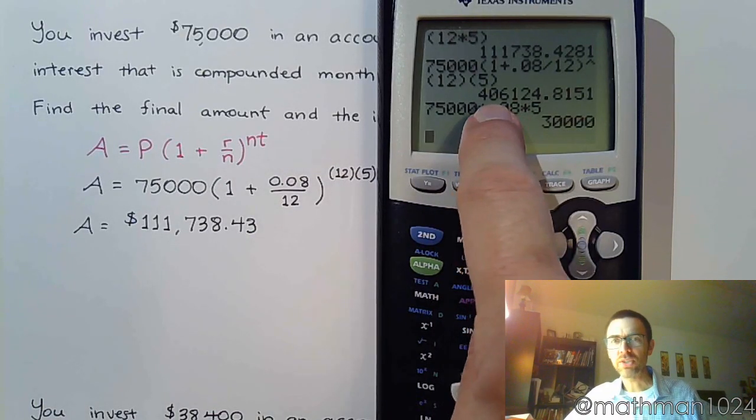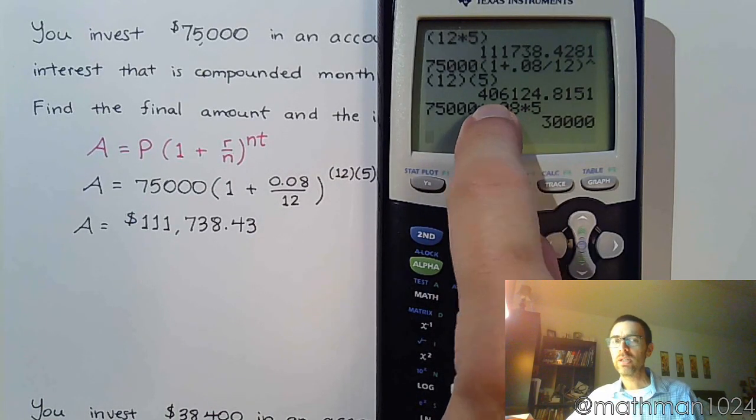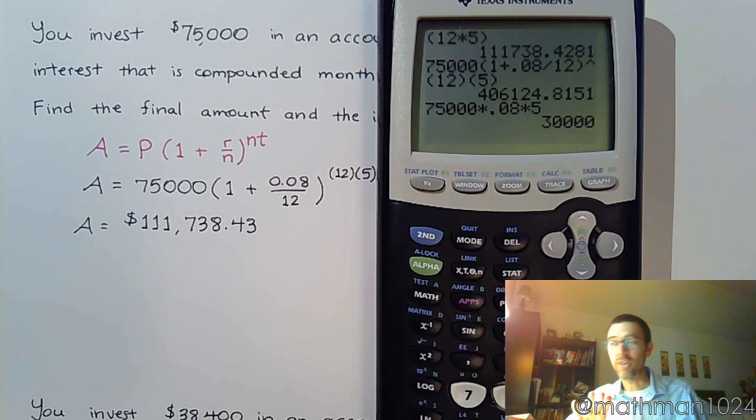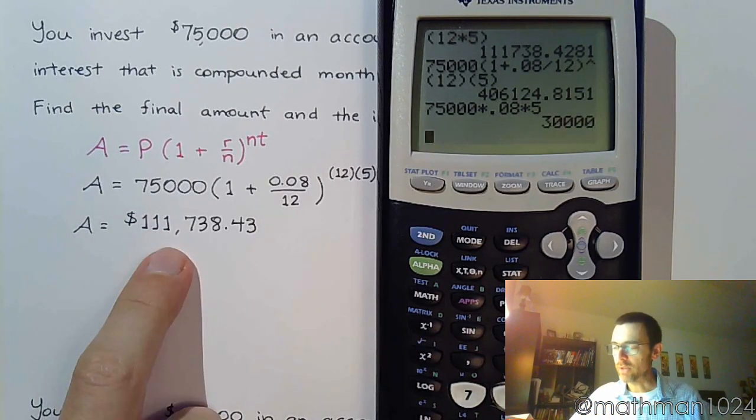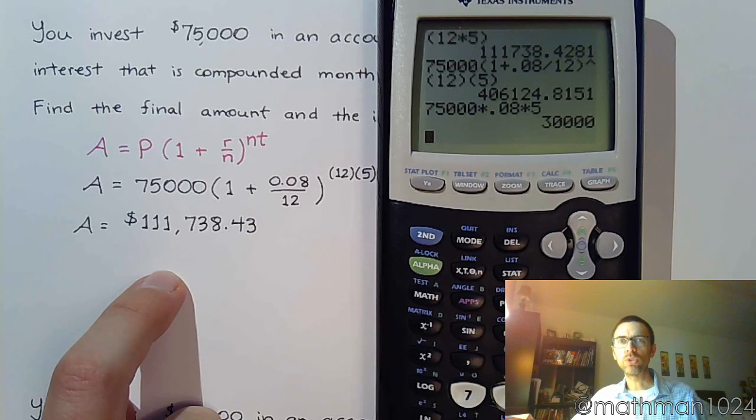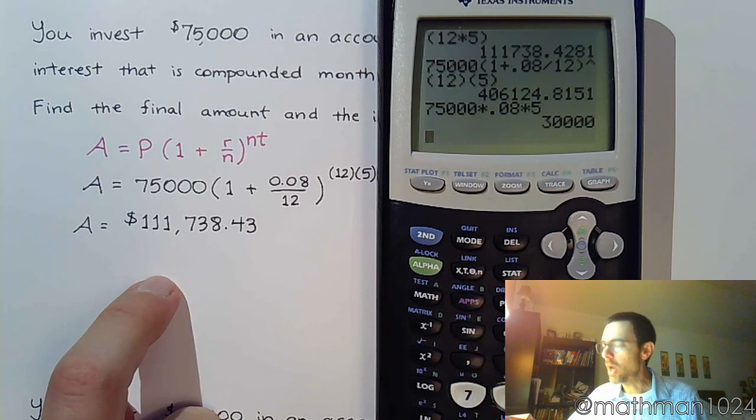But, when I look here, and I see this answer of $406,000, I mean, that's not even in the same ballpark. You're not even playing the same sport at that point. So, this is my final amount. The other question was, how much interest will you have earned?